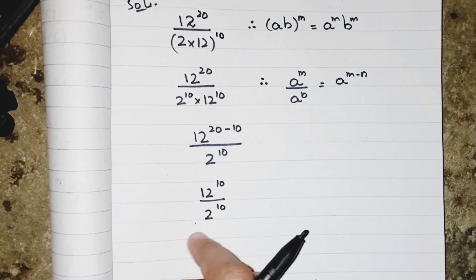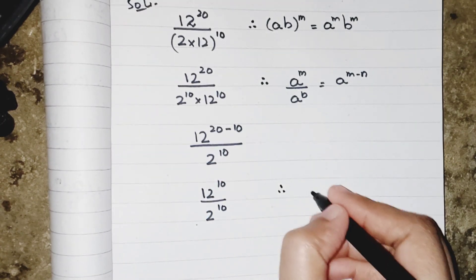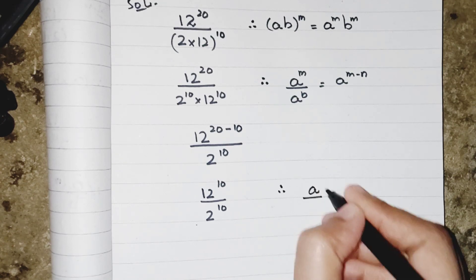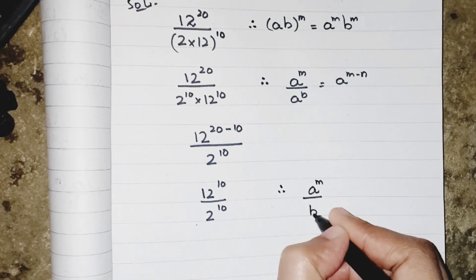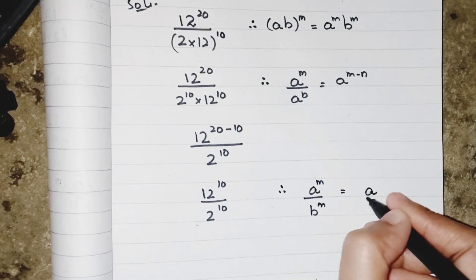Now I have different bases but the power is same. Again, the law of exponent says that when we have a's power m and b's power m, means different bases but the power is the same, so we can write the power as whole.